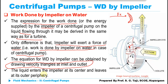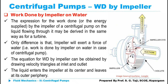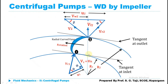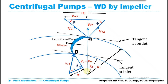Remember: liquid enters the impeller at its center (eye) and leaves at the outer periphery. Since liquid enters radially, the whirl component of velocity VW1 equals zero and alpha equals 90 degrees. R1 and R2 are the radii at inlet and outlet respectively. Vr1 is the relative velocity at inlet making angle theta with the horizontal, and U1 is the tangential velocity at inlet in the tangential direction.